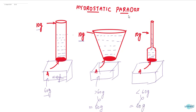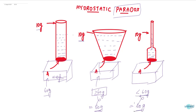This is called a paradox — paradox means what we see is not actually what is shown. The wider container should show greater than 60 grams, but it shows 60 grams only. The narrower container should show less than 60 grams, but it also shows 60 grams. So that is called a paradox — what we see is not actually true.